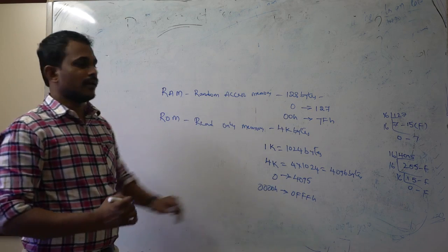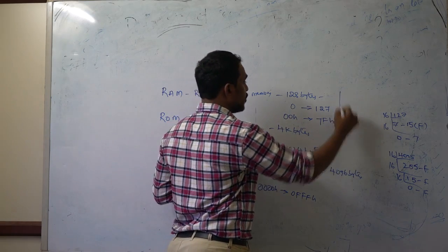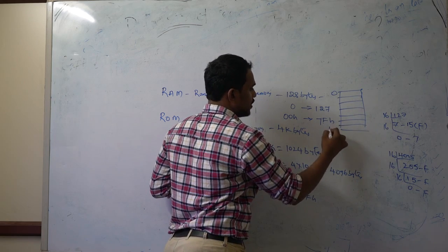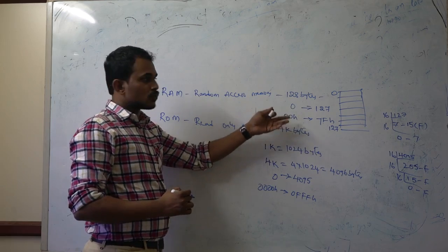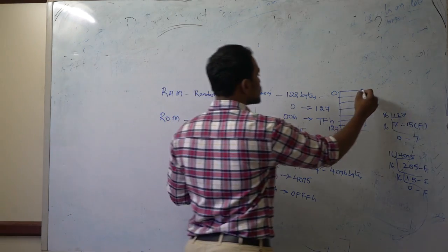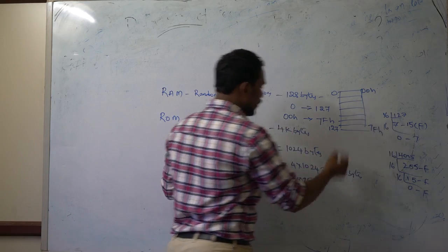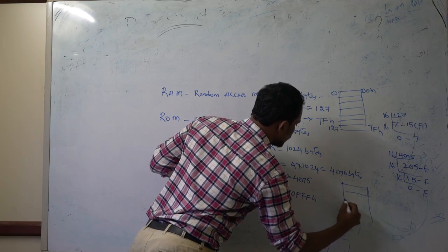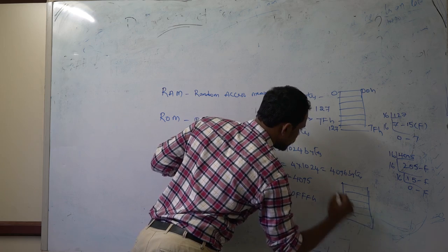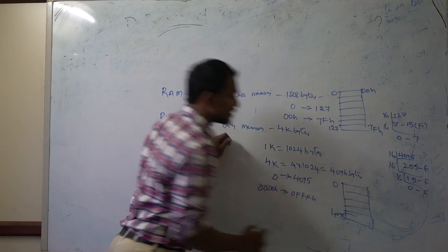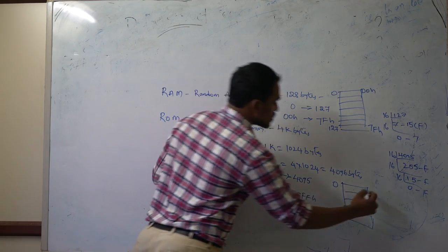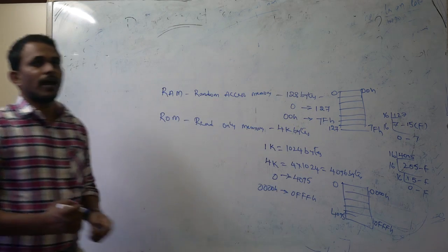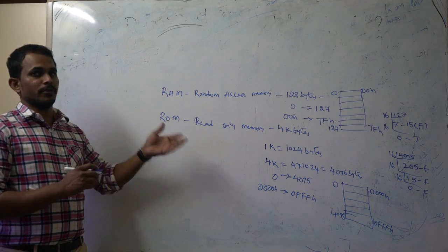To represent these in memory cell format: for the 128 bytes of RAM, the starting address is 0 and ending address is 127, which is 00H to 7FH. For ROM with 4096 bytes, the addresses go from 0 to 4095 in decimal, or 0000H to 0FFFH in hexadecimal.